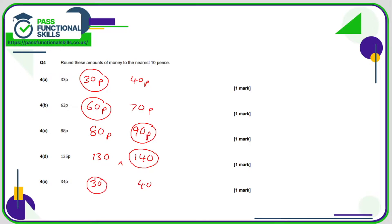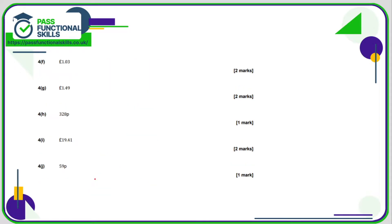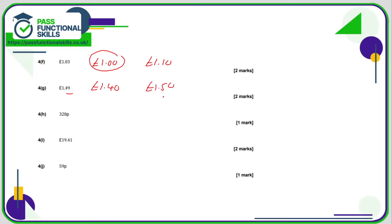One pound three pence is between one pound and one pound ten. Since £1.03 is less than £1.05 (the midpoint), we round down to a pound. £1.49 is between £1.40 and £1.50 — it's clearly closer to £1.50 than £1.40, so we round it up.